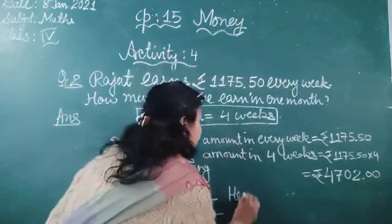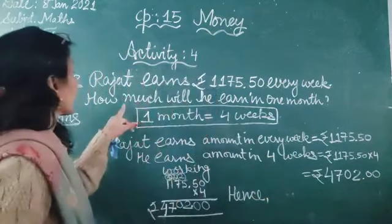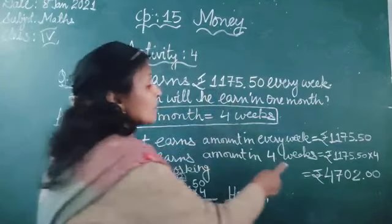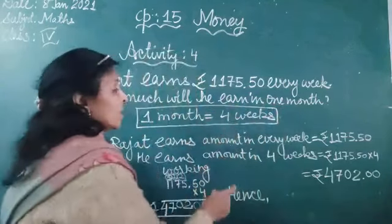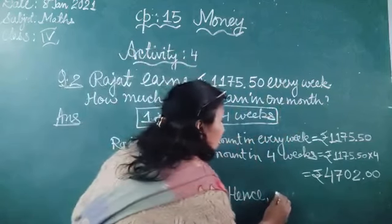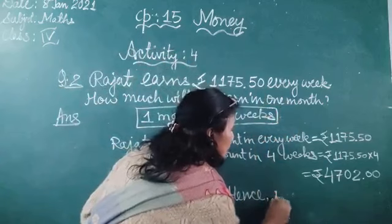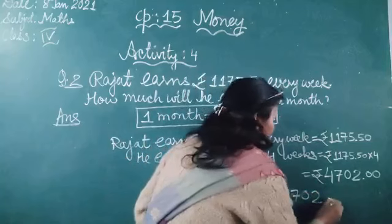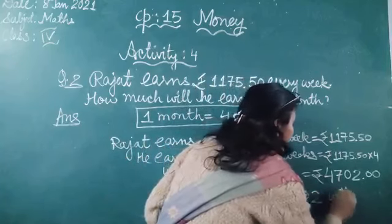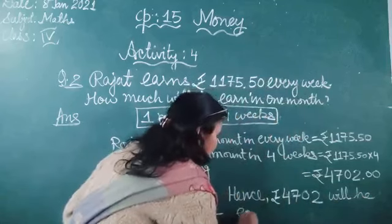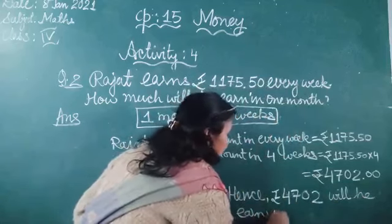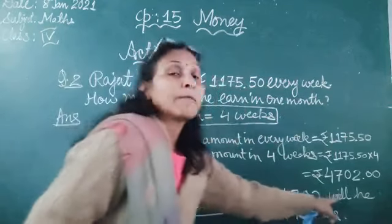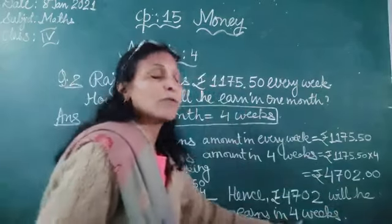Now we write how much money he earns in one month. The answer is rupees 4702.00. He earns this amount in four weeks, which is equal to one month.